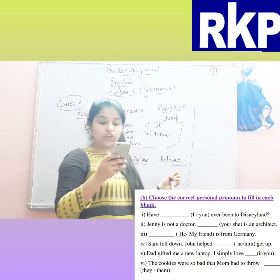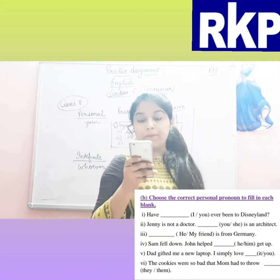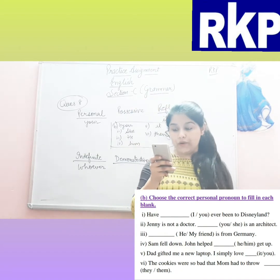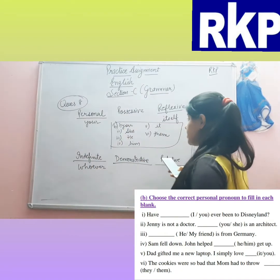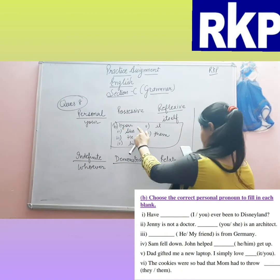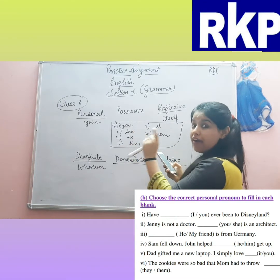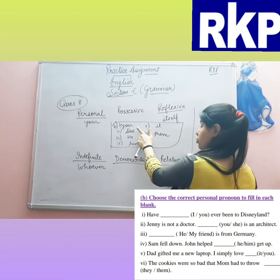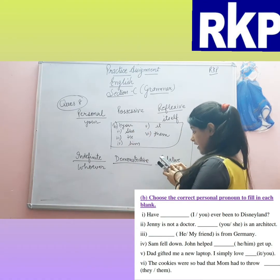The next question is to choose the correct personal pronoun. First: 'Have ___ ever been to Disneyland?' — Have I or have you? The answer is 'you.'